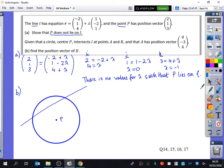Given that a circle, centre P, intersects L at points A and B, and that A has position vector (0, -3, 6), find the position vector of B. Now, there are many ways we could approach this problem, many ways. We could find out the distance between P and A, and what do we know about this distance? Equal. So, we could find out the distances between them, and we know that those two things are equal to each other.